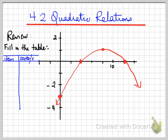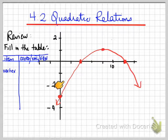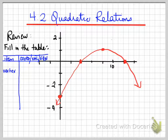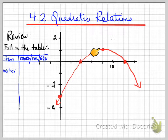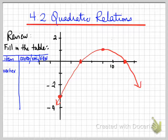I'm going to ask you to fill in a table of certain things. For example, I'm going to ask you to fill in what the vertex is on this particular graph. Where is the vertex? The vertex is located right here. The vertex has the coordinates (8, 1), and that's what we're looking at here.